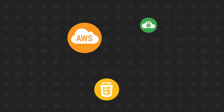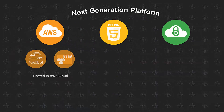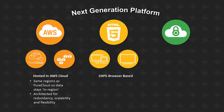Now this whole solution is built on a next-generation platform. Emite itself is hosted in the same AWS cloud as PureCloud, so your data stays in-region. It's also architected for redundancy, scalability, and flexibility. Emite is an HTML5 application, so it's 100% browser-based, which means you can use it within PureCloud itself via the UI.